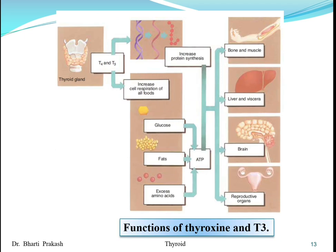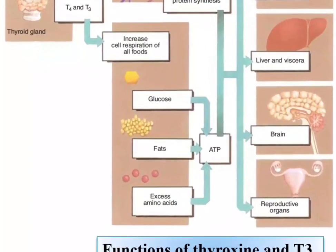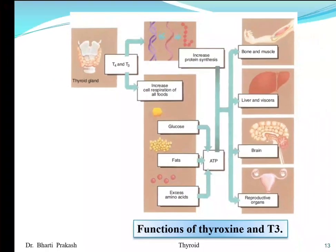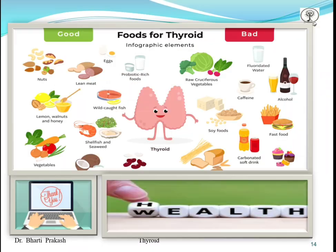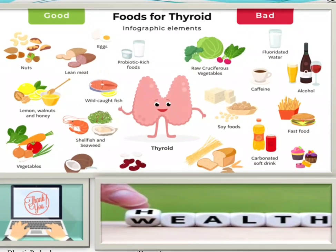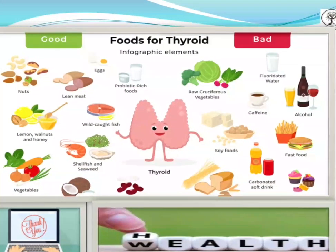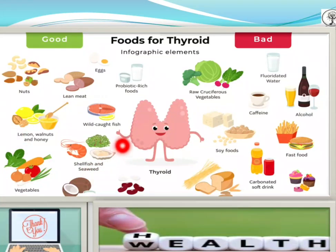This figure shows the functions of T3 and T4, how they affect the various organs. This diagram shows the foods for the thyroid — the good and the bad — and how they affect our thyroid gland. This portion shows the good foods for the thyroid, and this portion shows the foods that are bad for the thyroid.